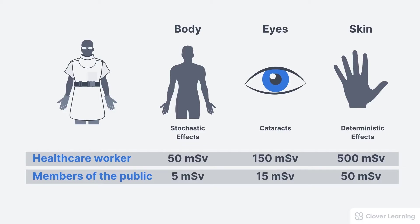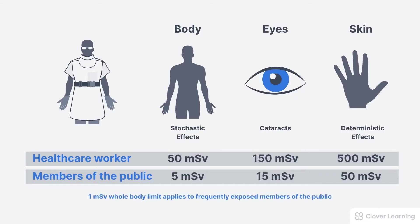Please note that there is one exception to this rule. 5 millisieverts is the whole body limit for infrequently exposed members of the public, like visitors at an imaging facility. A lower limit of 1 millisievert applies to frequently exposed members of the public, like clerical staff and others that work near radiation but not with radiation.